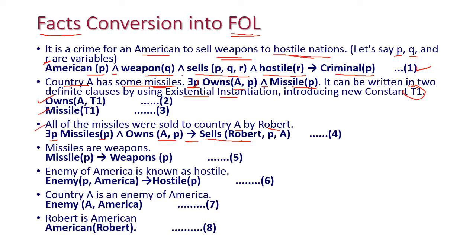The next statement: missiles are weapons, which gives missile(P) → weapon(P). This is the fourth statement. The next statement: an enemy of America is known as hostile — enemy(P, America) → hostile(P). Next: country A is an enemy of America — enemy(A, America). And the last one: Robert is American — American(Robert). This is how we convert all the English statements into first-order logic statements.